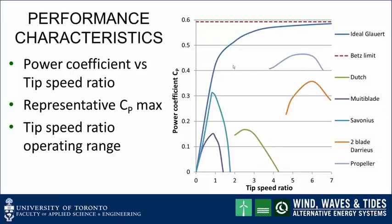The Darrieus machines are a real design challenge. Most current effort seems to focus on the H-type vertical axis wind machines. The CP shown here is representative, but certainly higher CP values have been achieved by both Darrieus and H-type machines — some up into the 0.45 range — though this is just intended to be representative.